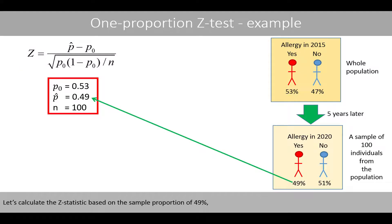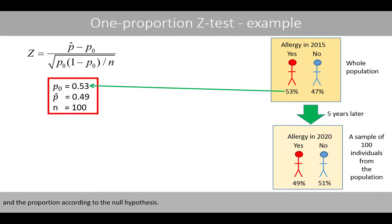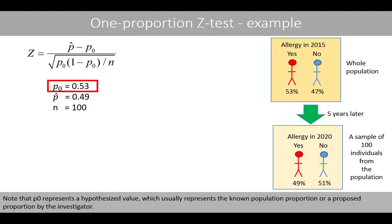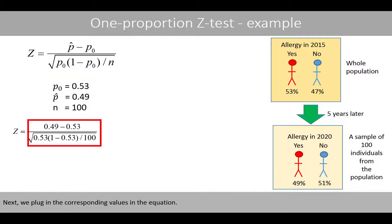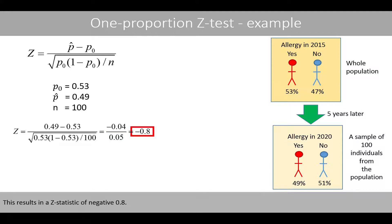Let's calculate the Z-statistic based on the sample proportion of 49%, a sample size of 100 individuals, and the proportion according to the null hypothesis. Since the null hypothesis states that there is no change in the proportion, the hypothesized value is 53%, the proportion from 2015 when the whole population was analyzed. Note that p-zero represents a hypothesized value, which usually represents the known population proportion. We plug in the values: the difference between the two proportions is negative 0.04, the standard error is equal to 0.05, and this results in a Z-statistic of negative 0.8.